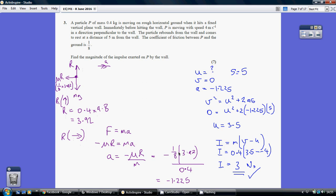Now I know that mu is an eighth, my coefficient of friction is an eighth. I know my normal reaction is 3.92. So my acceleration, or rather deceleration, is going to be minus 1.225. So I'm accelerating at minus 1.225, because I'm decelerating.